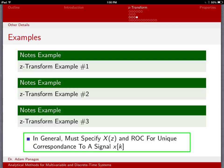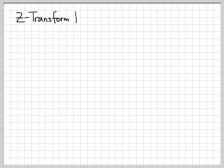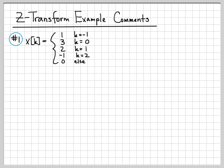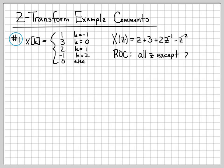Let's talk about that phenomenon by summarizing what we found in each of these different examples. In example 1, we worked with a discrete-time signal that had a finite number of non-zero points. We computed the Z-transform, found its value, and determined that the region of convergence was everywhere on the z-plane except the points z equals plus or minus infinity, because if z is negative infinity or positive infinity, this point blows up and that's a pole of X(z).